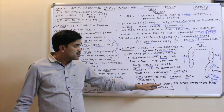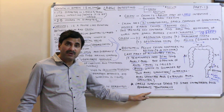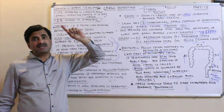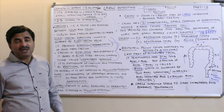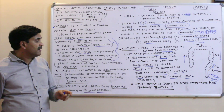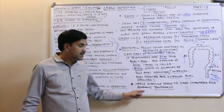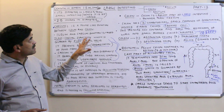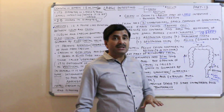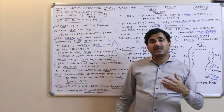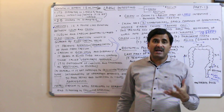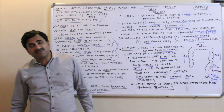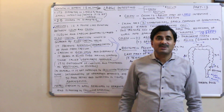The large intestine serves to store unabsorbed food remnants temporarily, and it also absorbs some water and salt — which we will discuss further in the physiology of digestion. Food remnants are stored until they are released out through the anus. This completes our discussion of the alimentary canal. In the next videos, we will cover the digestive glands — the liver, pancreas, and salivary glands — and finally the physiology of digestion.